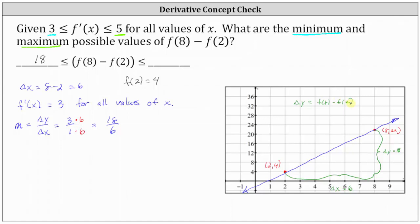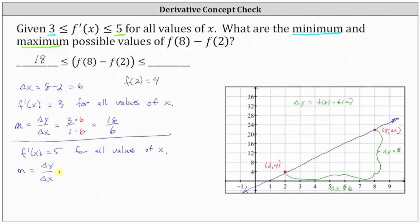Now we'll determine the maximum possible value of f of 8 minus f of 2 by assuming f prime of x equals 5. If f prime of x is equal to 5 for all values of x, then the slope of the tangent line is always 5, and the graph of f of x would be a line with slope 5. With delta x equal to 6, multiplying the slope of 5 over 1 by 6 gives an equivalent slope of 30 over 6. Therefore, the maximum possible value of f of 8 minus f of 2 is 30.